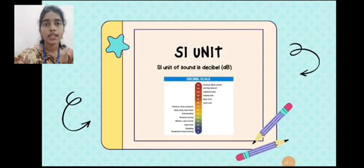The SI unit of sound. SI unit of sound is decibel. It is denoted by dB.